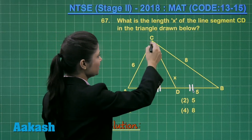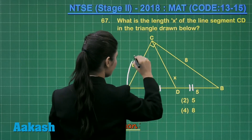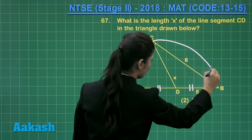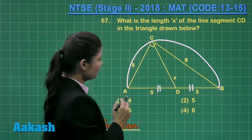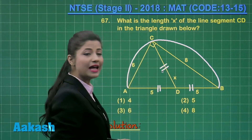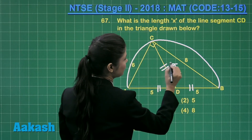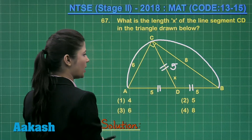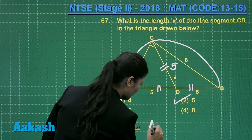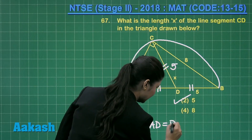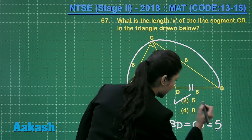That is why each and every point will be equidistant from D. If you draw a circle, it will definitely pass through A, B, and C. So you will find that CD is also a radius, measuring 5 units because it is also the radius.